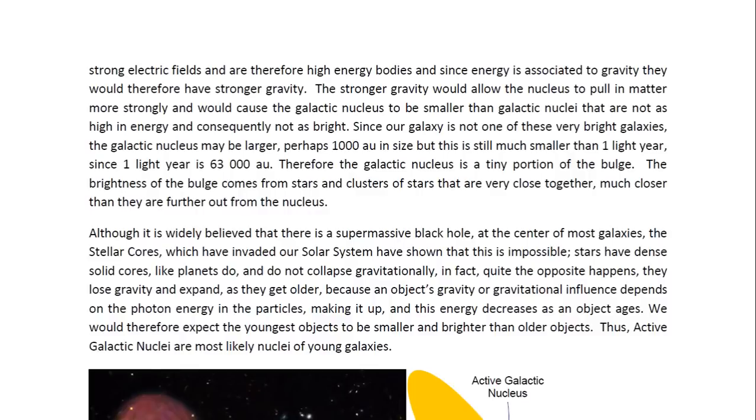Since our galaxy is not one of these very bright galaxies, the galactic nucleus may be larger, perhaps 1,000 AU in size. But this is still much smaller than one light year, since one light year is 63,000 AU. Therefore, the galactic nucleus is a tiny portion of the bulge. The brightness of the bulge comes from stars and clusters of stars that are all very close together and much closer than they are further out from the nucleus.